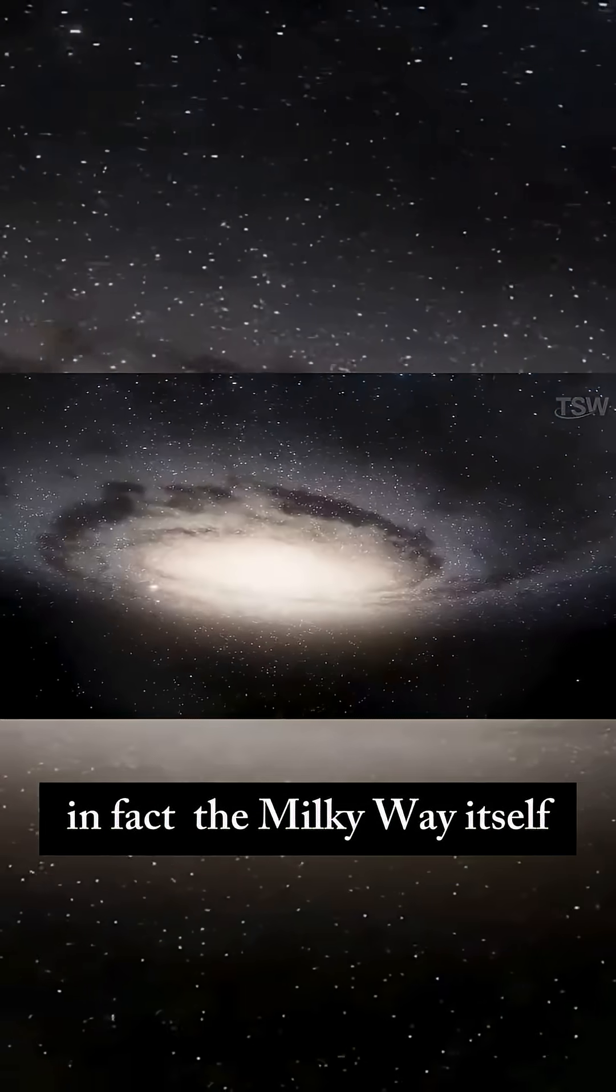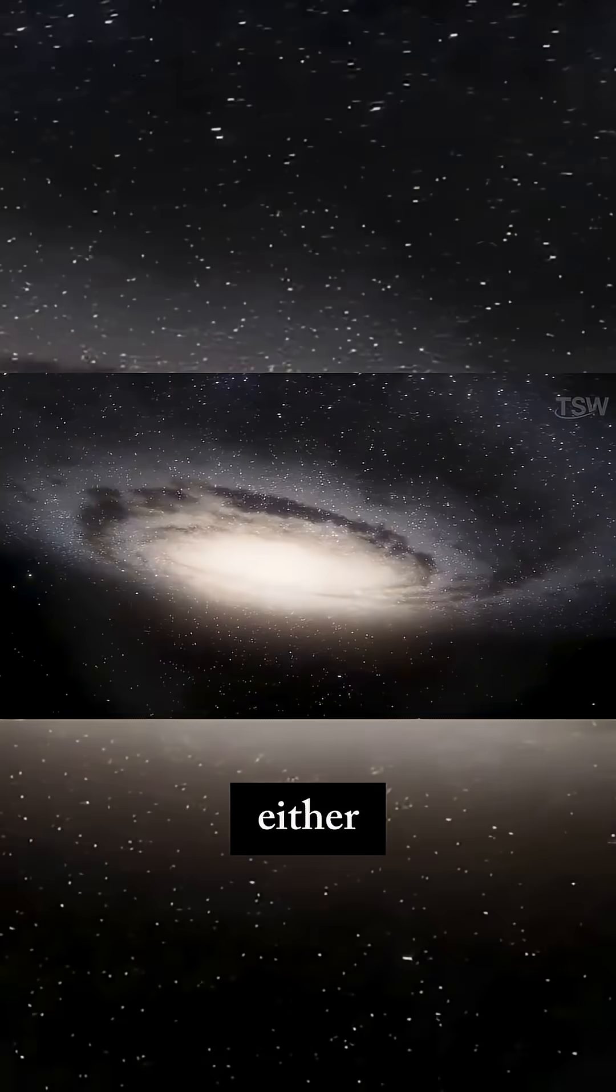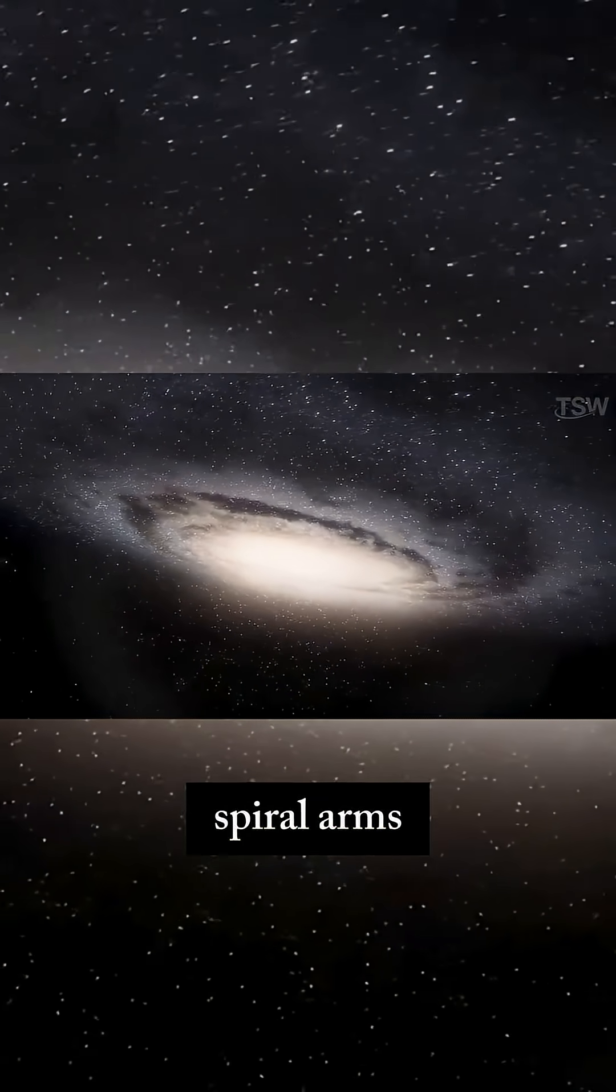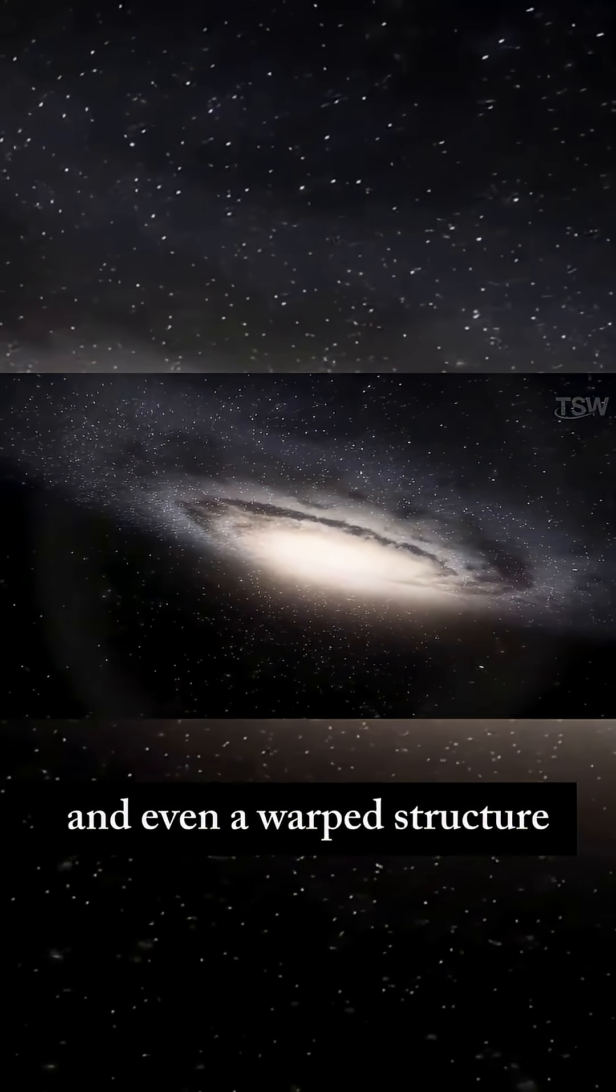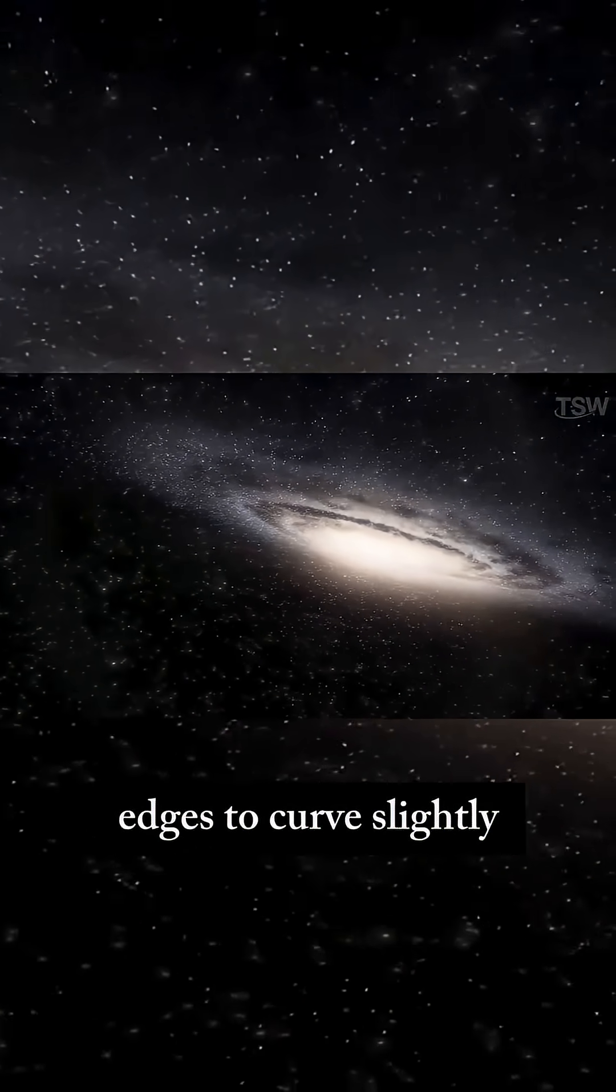In fact, the Milky Way itself isn't a perfectly flat disk either. It has a central bulge, spiral arms, and even a warped structure that causes the outer edges to curve slightly.